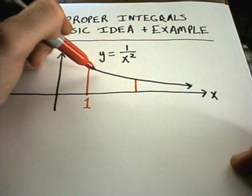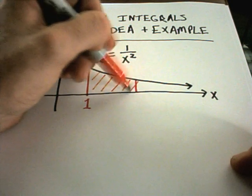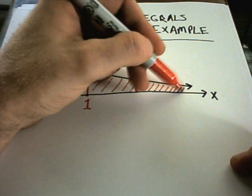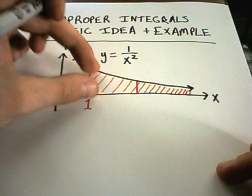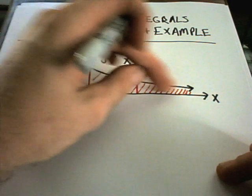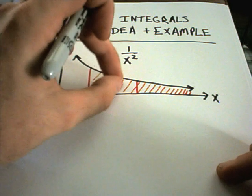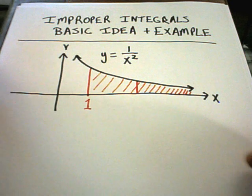But in this case what we want to do is we want to calculate the integral not up to some finite number, but we just want to keep going and keep going. So this thing's getting smaller and smaller. So even though it's going off infinitely far, the intuition is maybe the space underneath here is getting small enough fast enough so that it'll actually turn out to be some finite number.